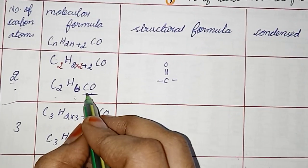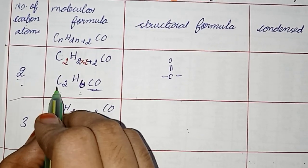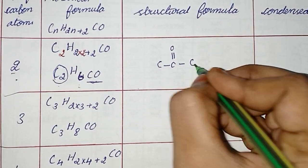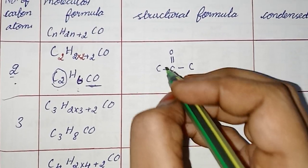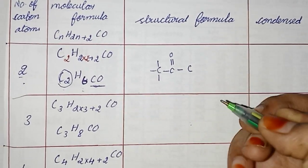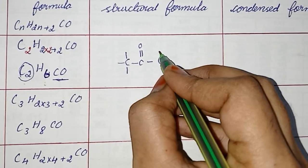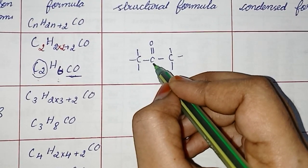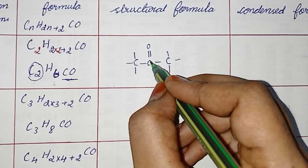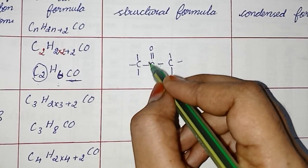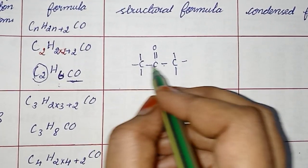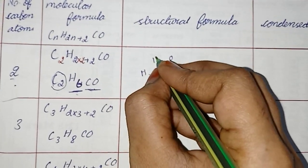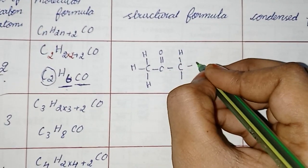First we write the functional group, then we move on to the number of carbon atoms — there are 2, so one carbon here and one carbon here. This carbon needs 3 more bonds to satisfy tetravalency, and this one also needs 3 more bonds. The central carbon is surrounded by 4 bonds; a double bond contains 2 single bonds, so total 2, 3, 4 — the central carbon's valence is satisfied. The framework is now completed. How many hydrogens? 6: 1, 2, 3, 4, 5, 6.